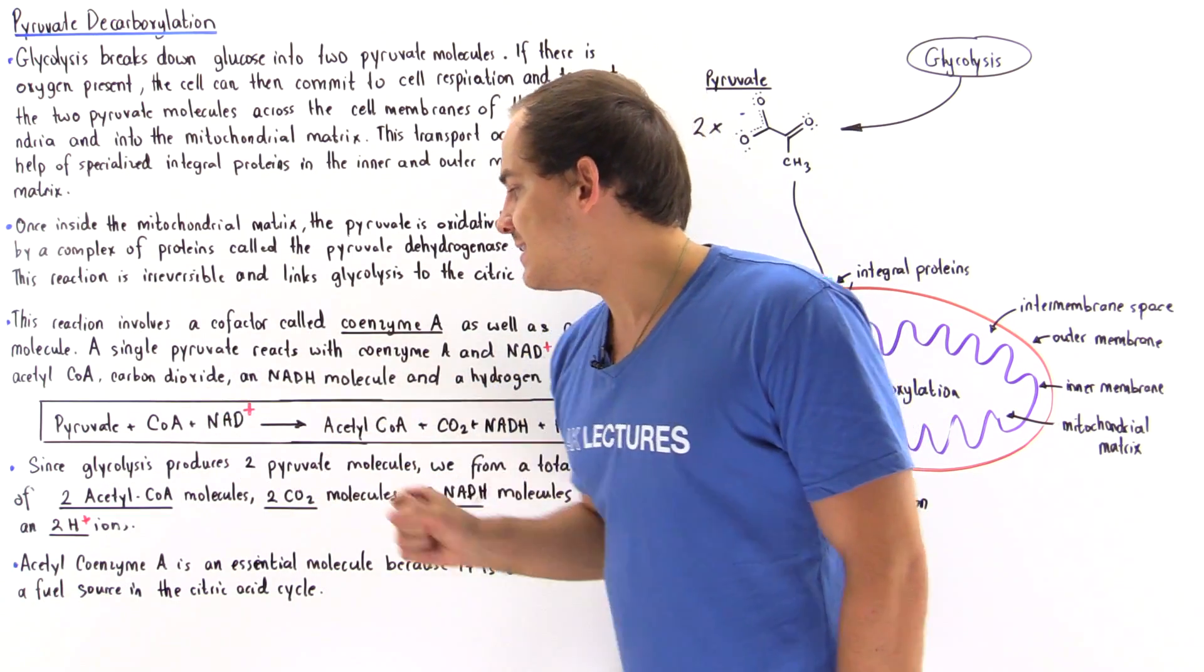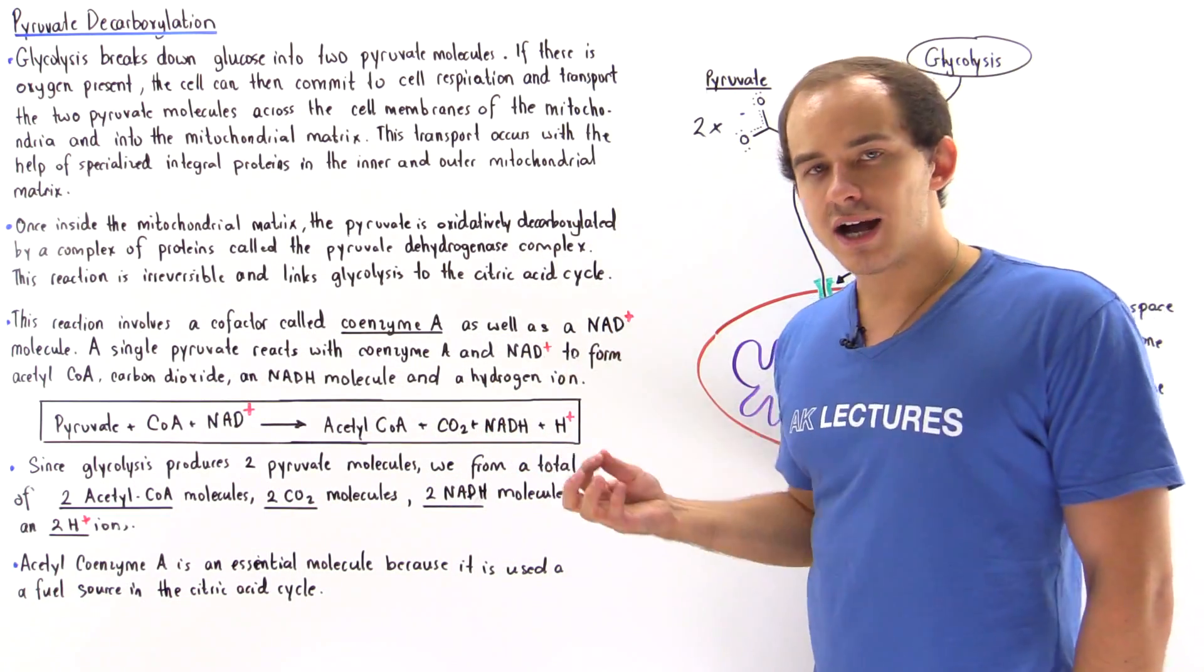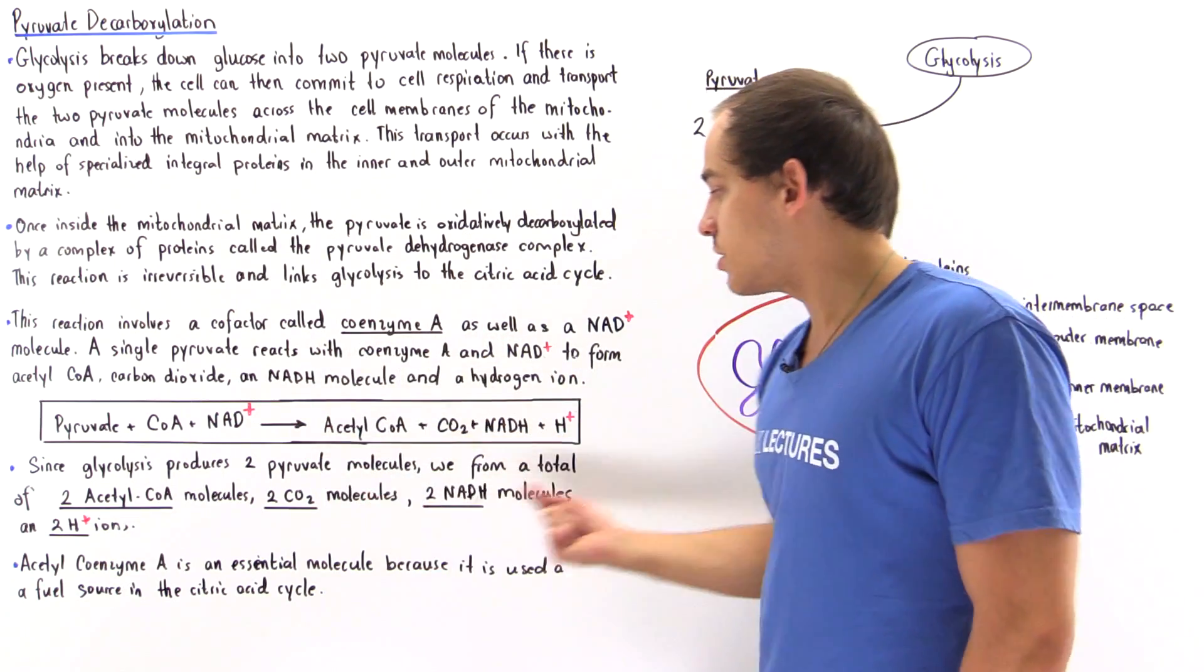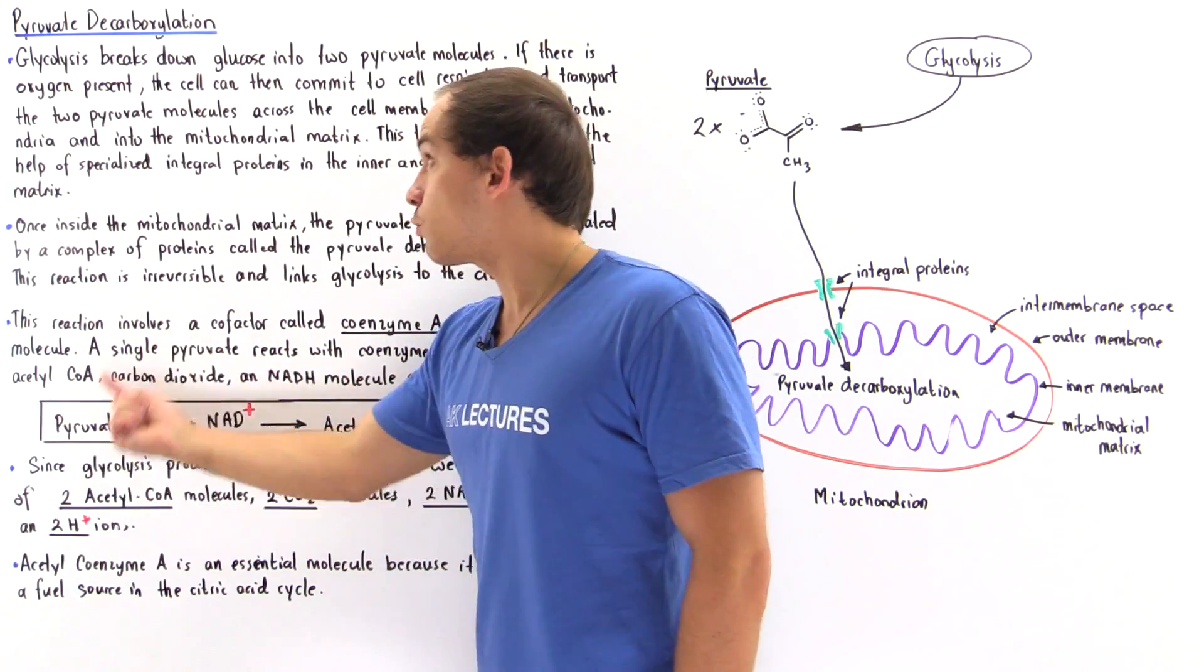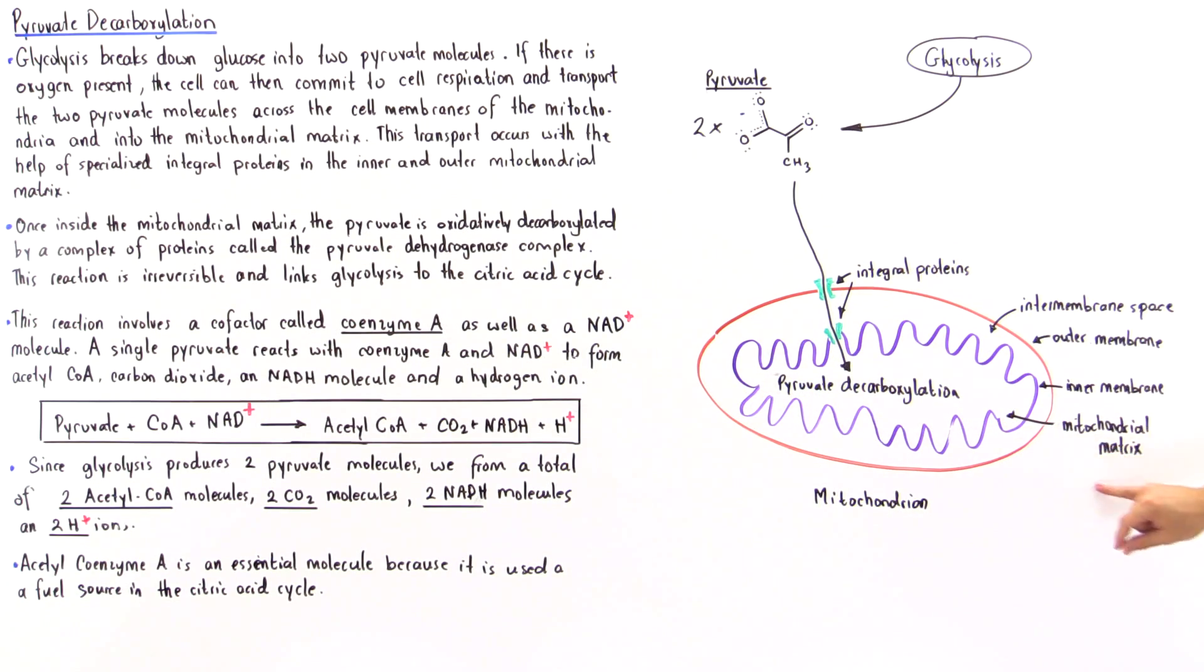We also reduce NAD+ into NADH and form the H+ ion. So these are the products and these are the reactants of the pyruvate decarboxylation process that takes place within the mitochondrial matrix.